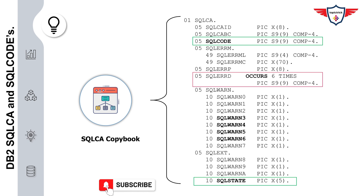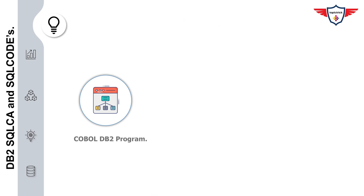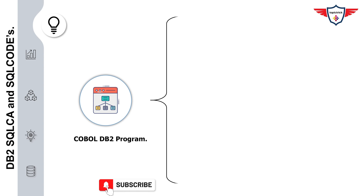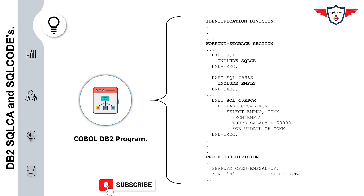There are two different ways to include the SQL Communication Area in your COBOL DB2 program. The first way is to directly write all the variables of the SQL Communication Area in your Working Storage Section. If you do that, make sure all these variables are initialized properly.